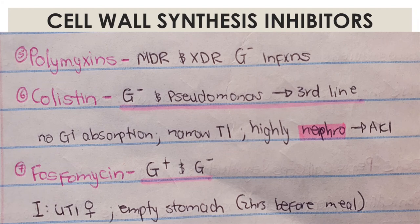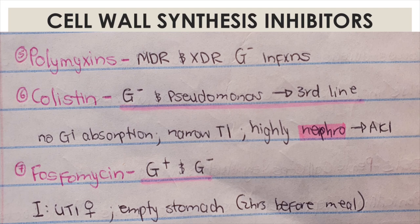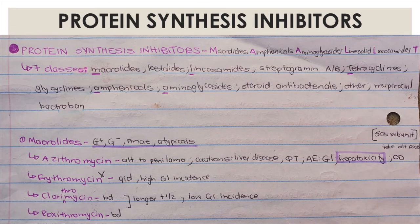Protein synthesis inhibitors include macrolides, phenicols, aminoglycosides, linezolid, lincosamides, and tetracyclines. Macrolides attack the protein synthesis process in bacteria and their spectrum covers gram positive, gram negative, anaerobes, and atypicals — making them broad spectrum with more side effects. They act on the 50S ribosomal subunit of the bacterial protein synthesis process.